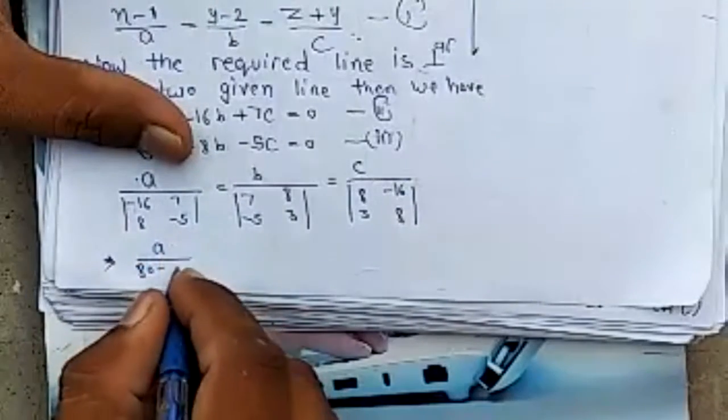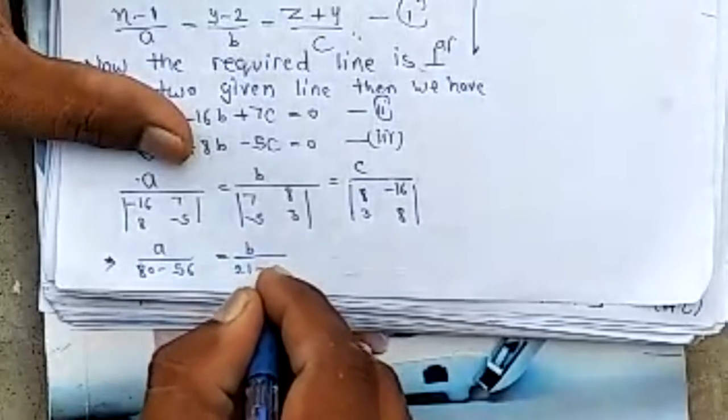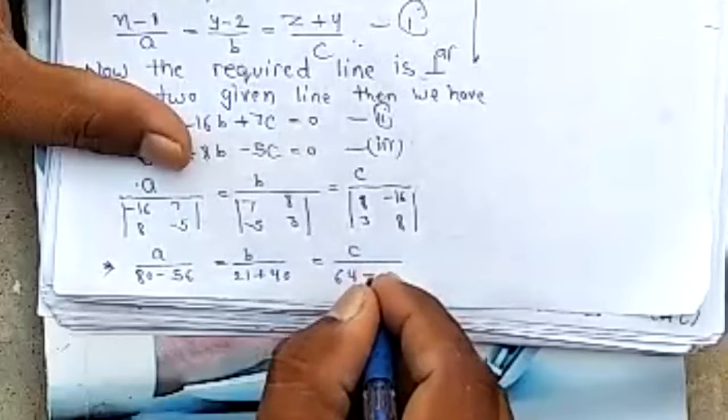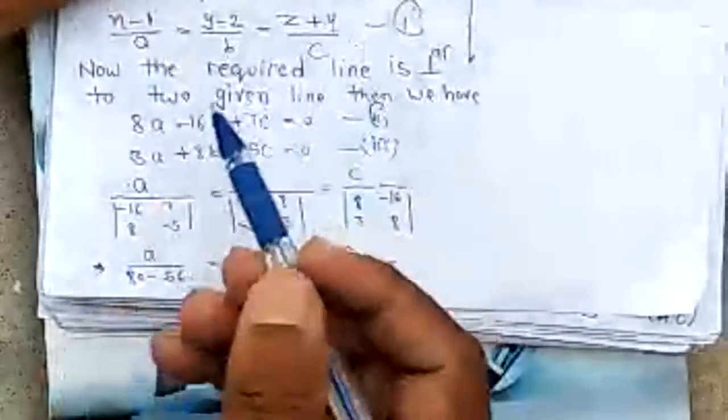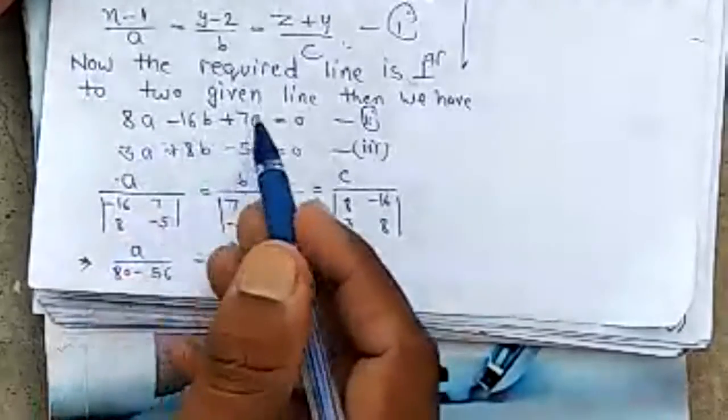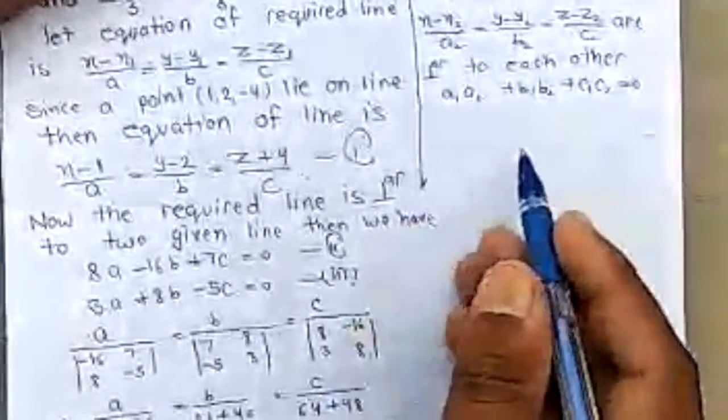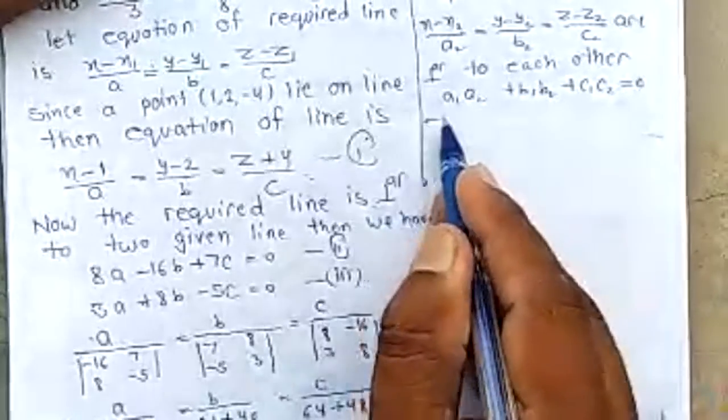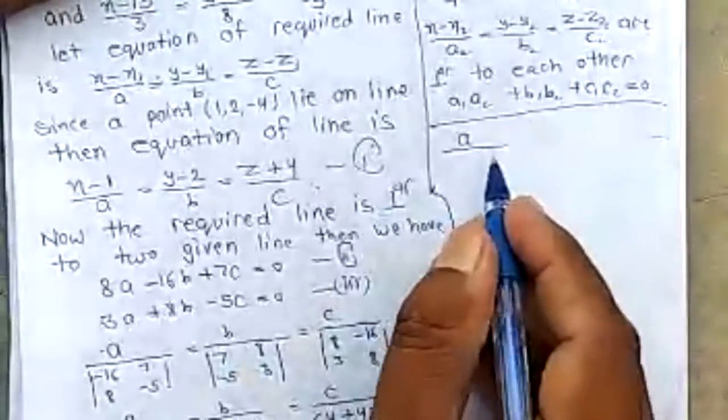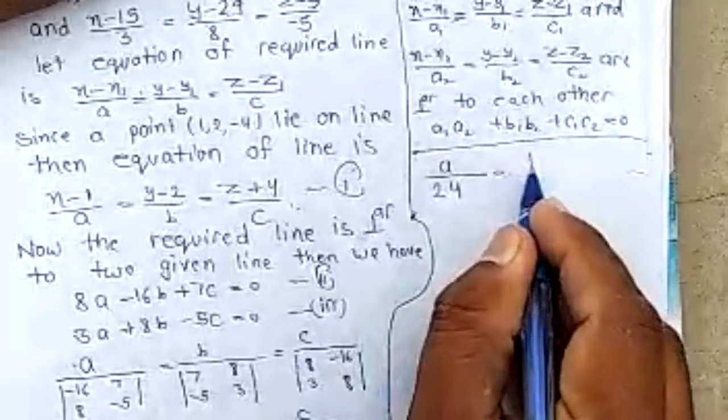(8)(8) − (−16)(3). So a by 80 minus 56, b by 21 plus 40, c by 64 plus 48. Now we have a by 24, b by 61,